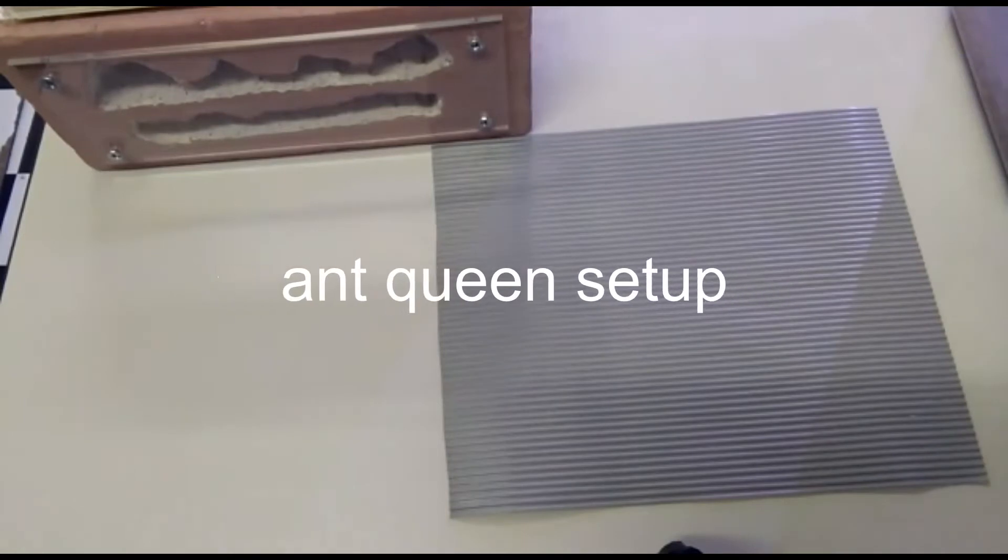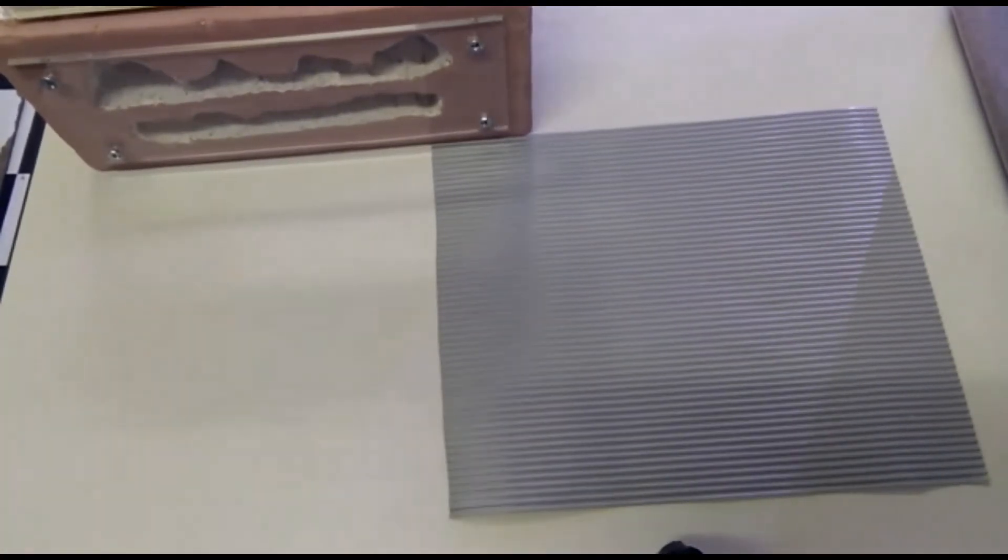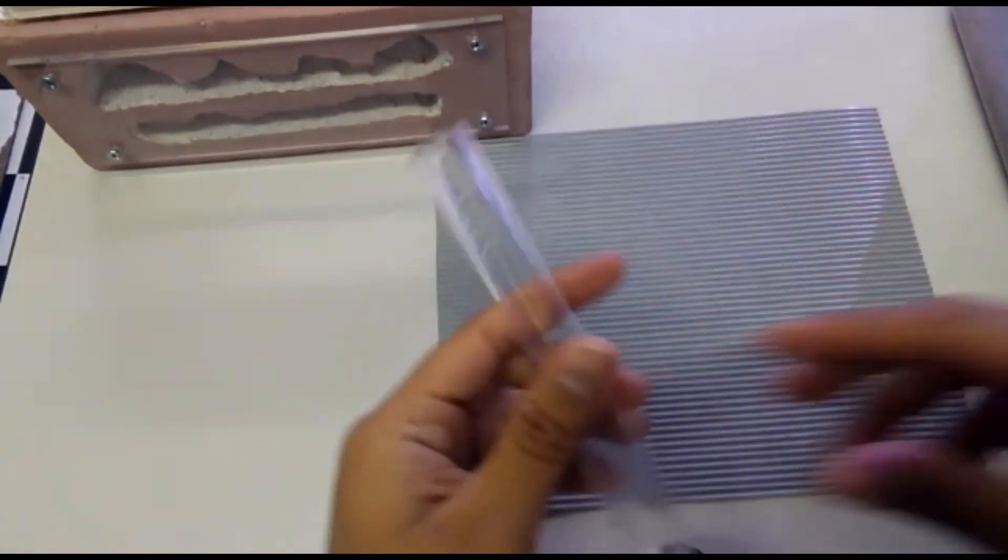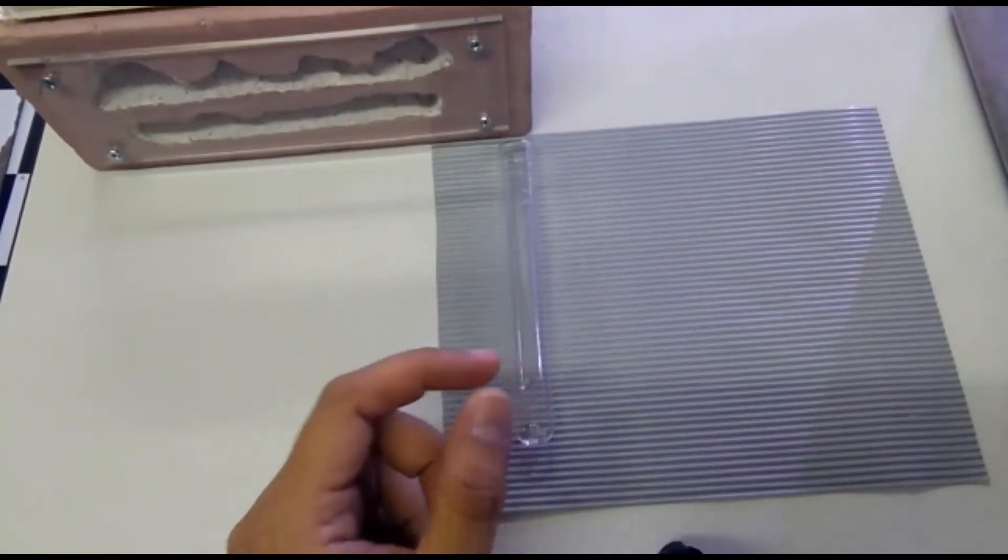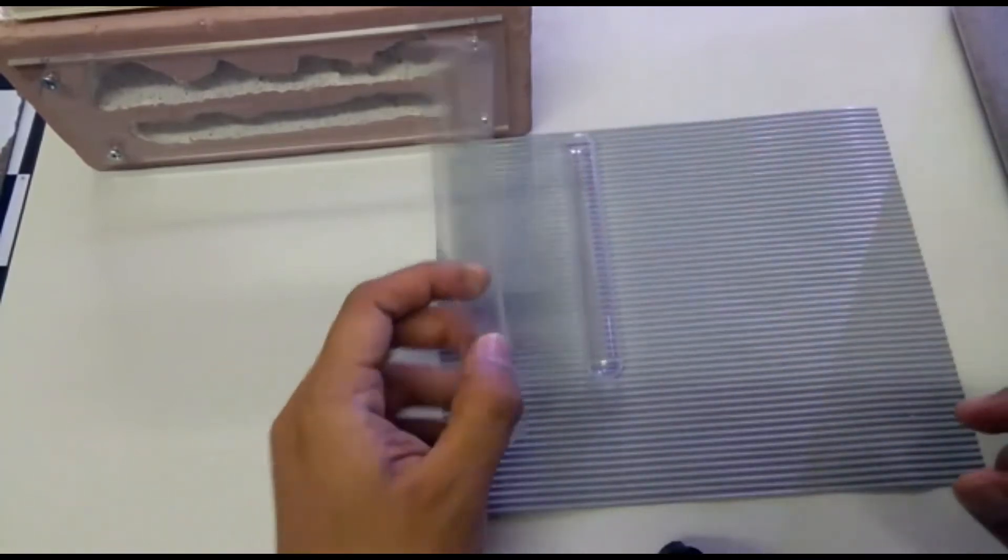Okay, as I promised I will show you how to do a setup for the ant queen. For my setup I'm using, as is common in ant keeping, the test tube. There are many different sizes of test tubes you can find, small and big sizes. This is 150 mm diameter.